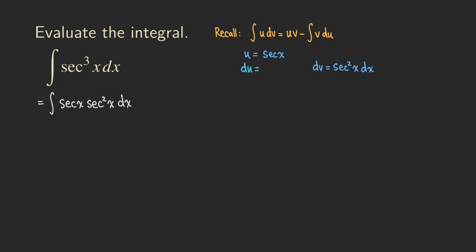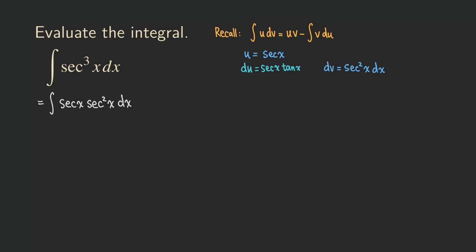The next step is to find du. du is the derivative of secant x. So if we take the derivative of secant x, we are going to get secant x tangent x dx. Now, what about v? The v is the antiderivative of secant square x, and that's just tangent x. This is the reason we put dv as secant square x — it's because we can integrate this function easily and directly. And we can also differentiate secant x directly. So that's why we're choosing our u and dv this way.